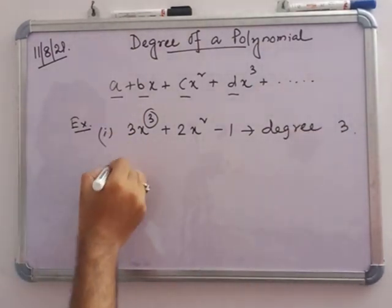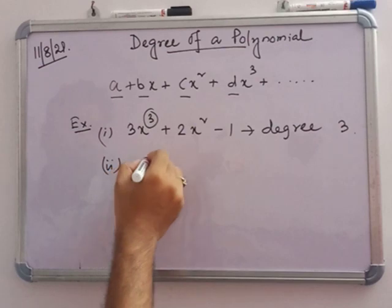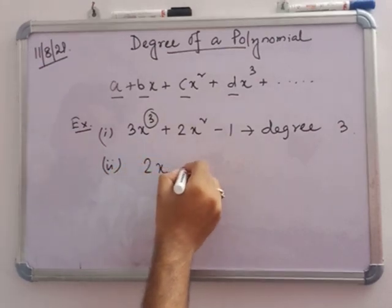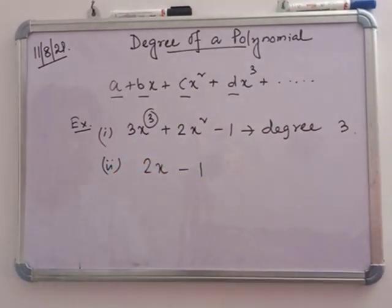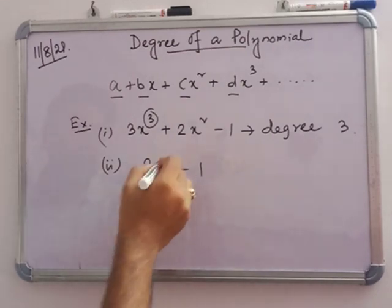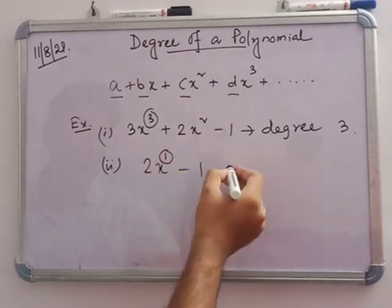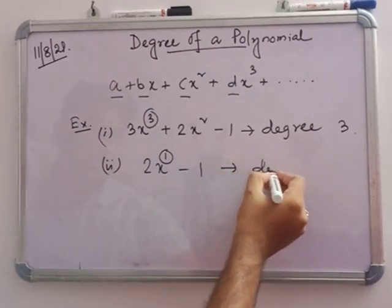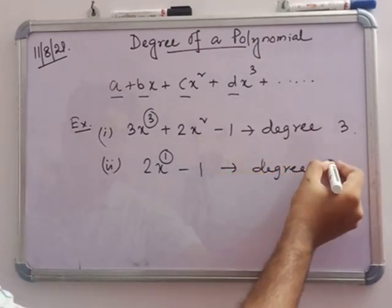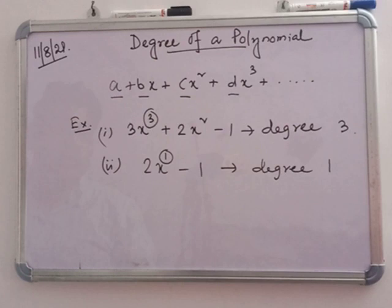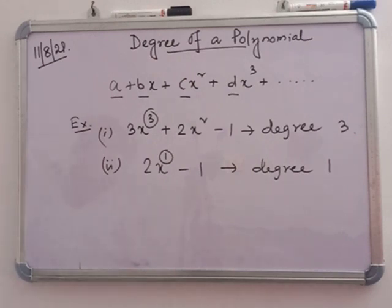Number 2: consider 2x minus 1. The power of x is 1, so the highest power is 1. The degree is 1. When the power of x is highest, that is the degree of the polynomial.